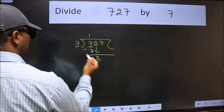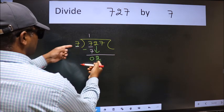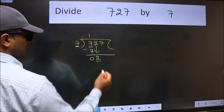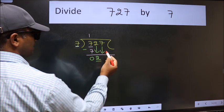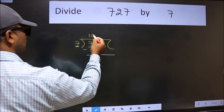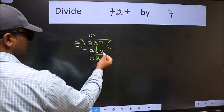Now here we have 2 and here 7. 2 is smaller than 7. So we should bring down the second number. And the rule to bring down second number is we should put 0 here. Then only we can bring this number down.